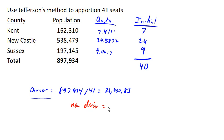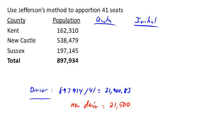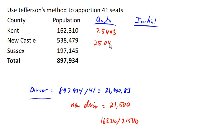We could pick anything we want that's smaller. Let's go ahead and try 21,500. If we do that, then our quotas are all going to change. We take 162,310 and divide it by this new adjusted divisor, and this becomes 7.5493. This becomes 25.0455, and this becomes 9.1695.